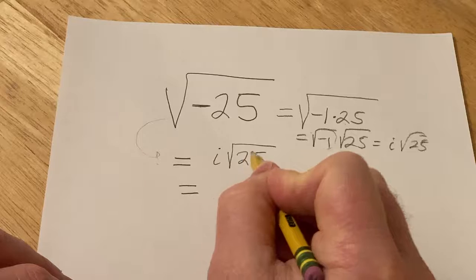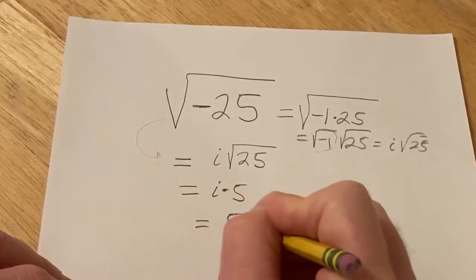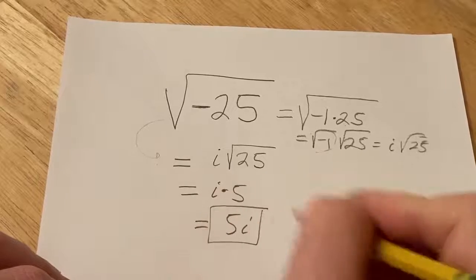And then the square root of 25 is 5. So this is i times 5. But that's really 5i. And so that would be the final answer.